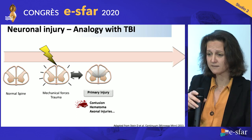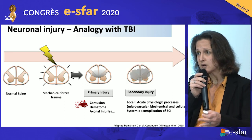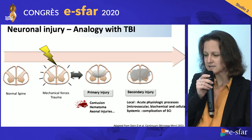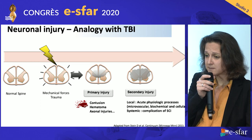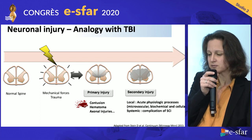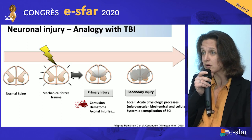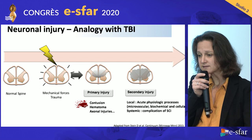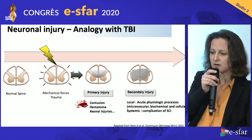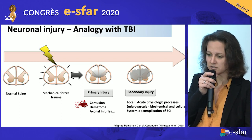Then you have a set of secondary injuries, mostly from local processes — microvascular, biochemical, and cellular processes. These are secondary insults from local origin, leading to edema, for example. And then you have secondary injuries of systemic origin, which are the consequences, mostly, of the complications of the spinal cord injury.